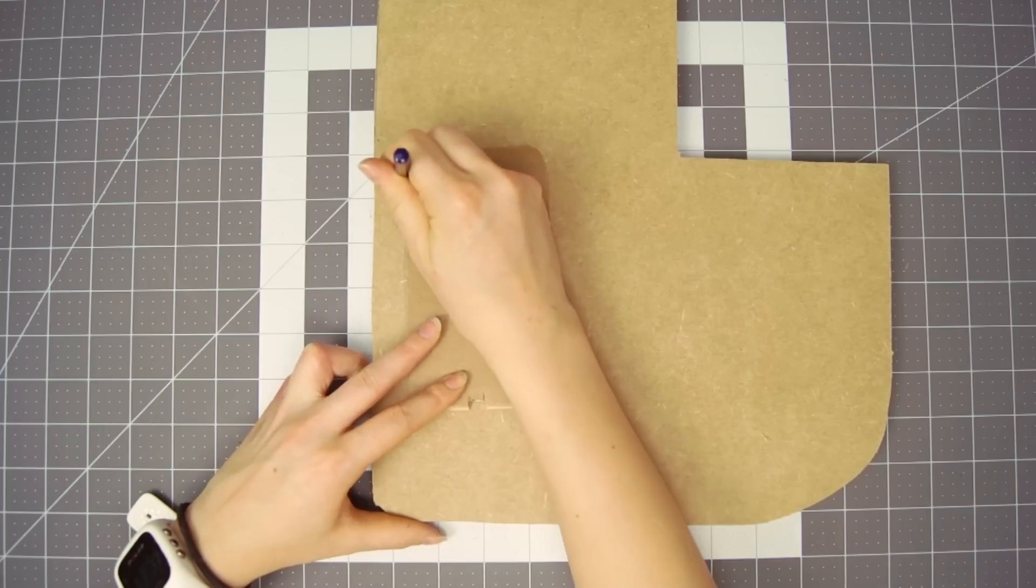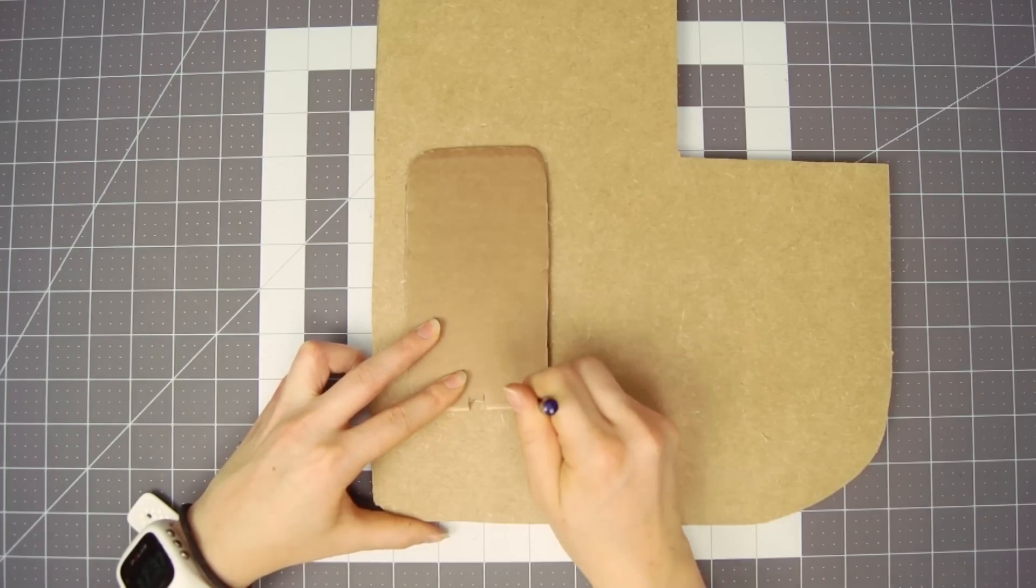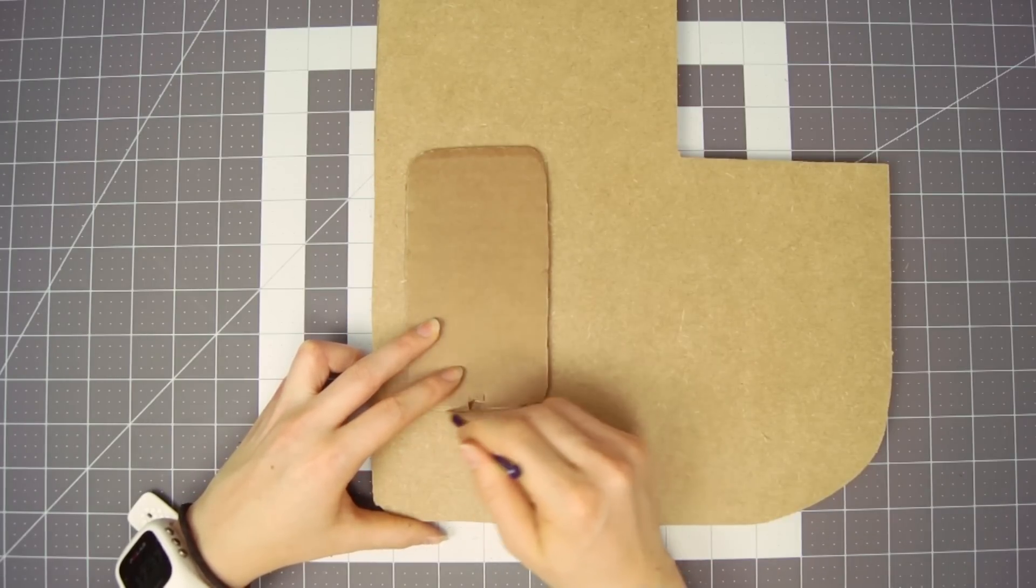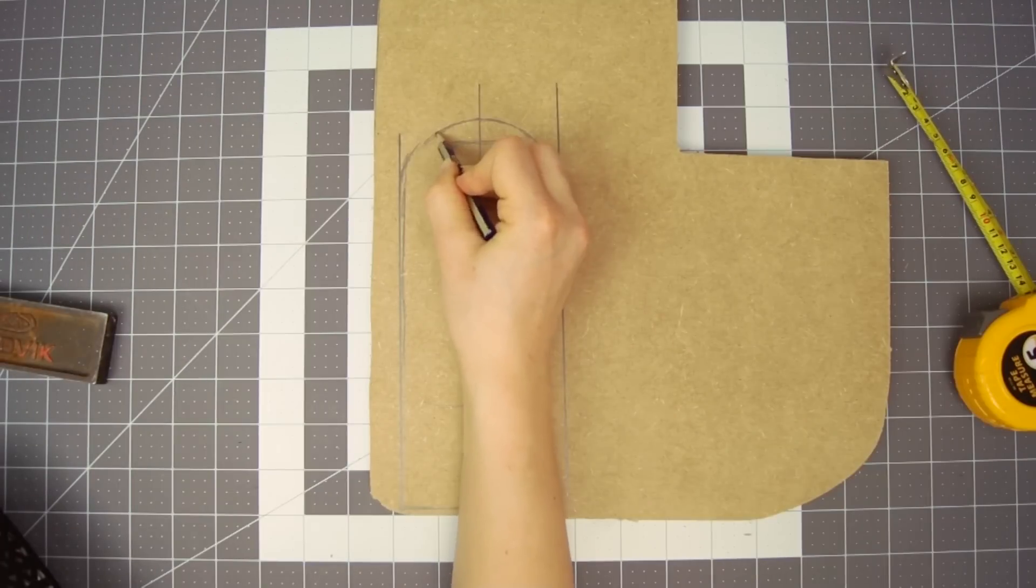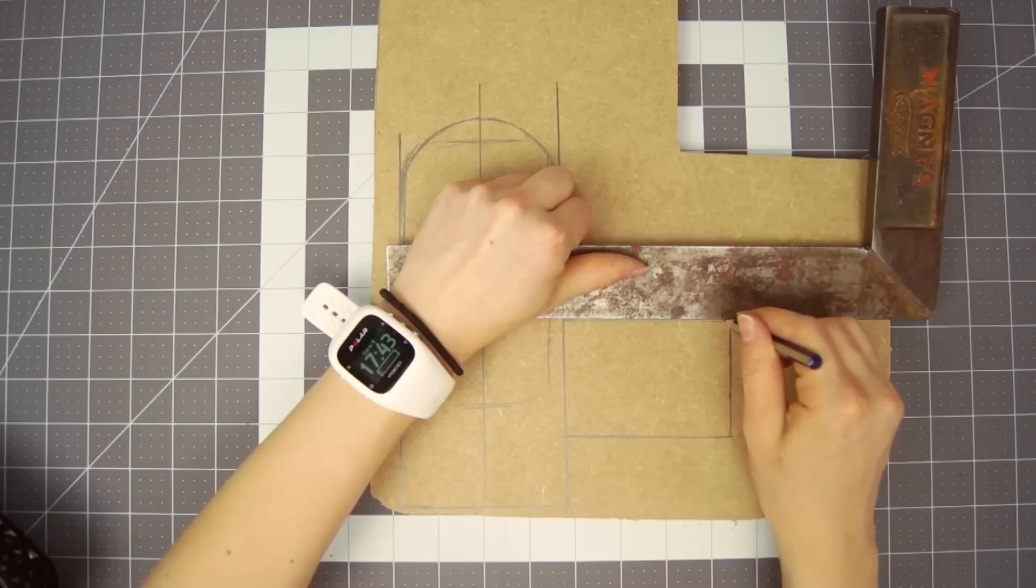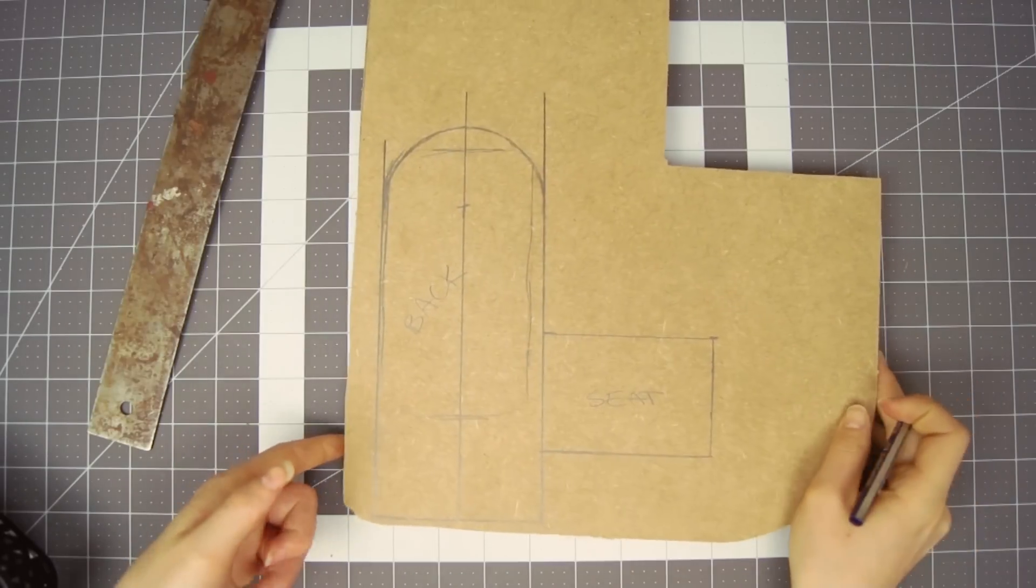I continued to make a basic shape of the throne out of some scrap MDF I had lying around. I marked up the size of my phone first and then drew a back piece that would be a bit wider than that. Then I marked the seat with the same width and the depth I wanted.